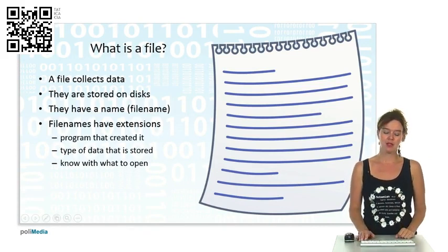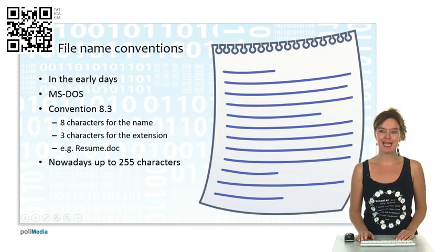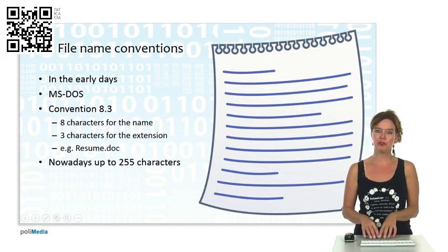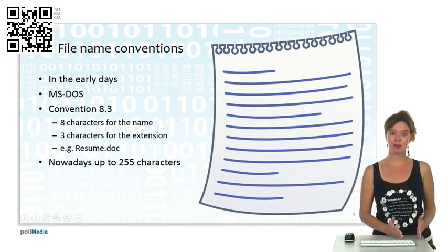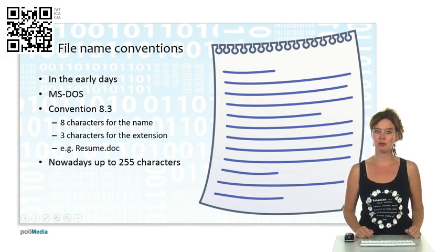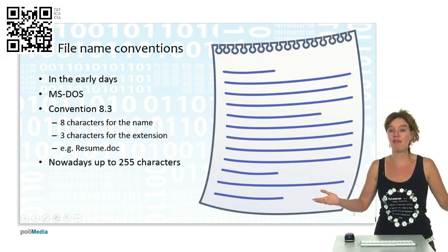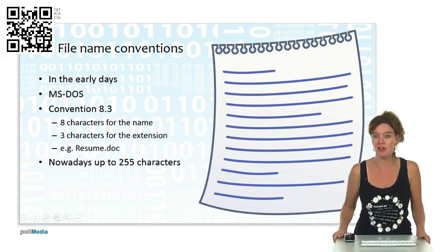In the early days we had MS-DOS, and the convention was 8.3: eight characters for the name and three characters for the extension, like for example resume.doc. Nowadays we can have filenames up to 255 characters and can make them really long.